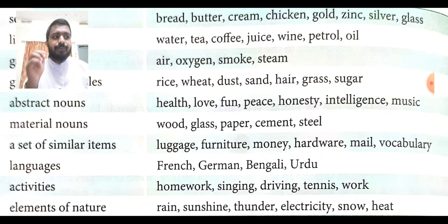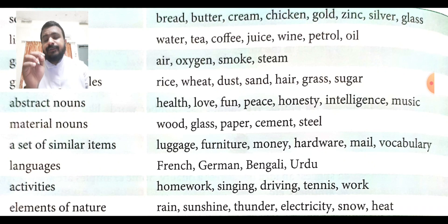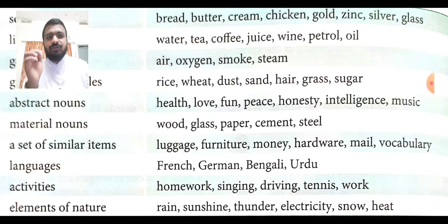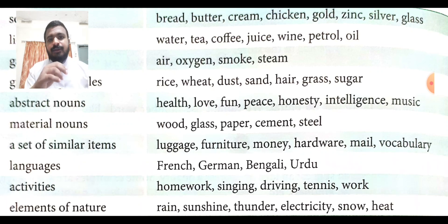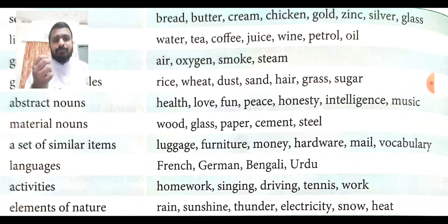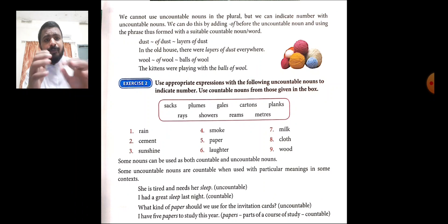On the next page there is a list of uncountable nouns organized into categories: solids — bread, butter, cream; liquids — water, tea, coffee, juice; gases — air, oxygen, smoke, steam; grains or particles — rice, wheat, dust, sand, hair, grass; abstract nouns — health, love, fun, peace, honesty, intelligence, music; material nouns — wood, glass, paper, cement, steel. There are also familiar items, languages, activities, and elements of nature.